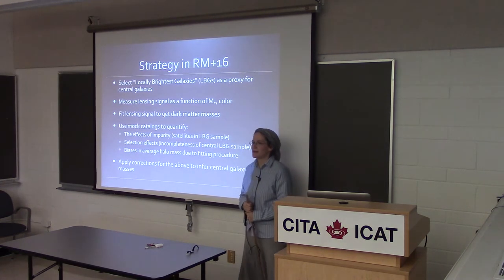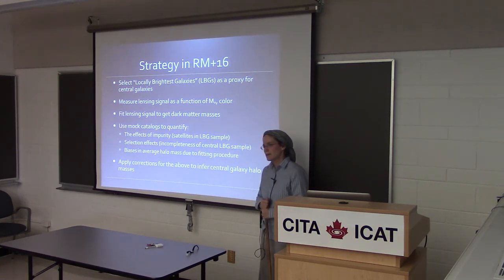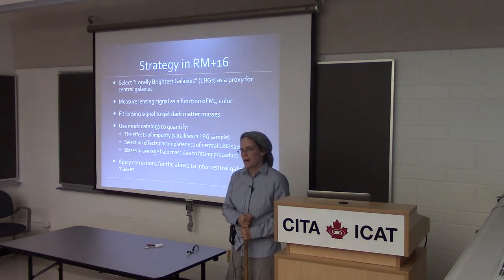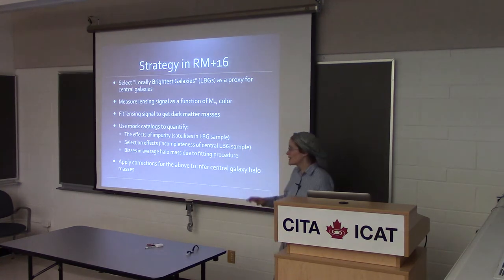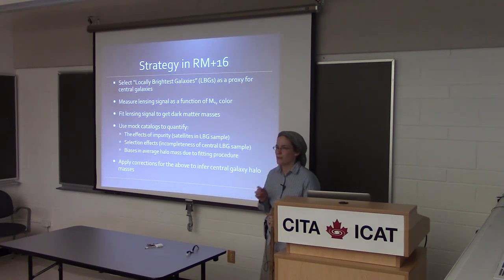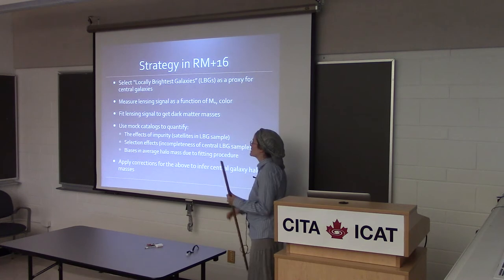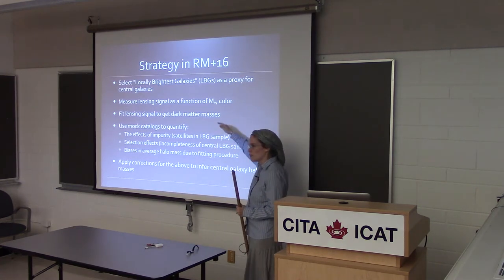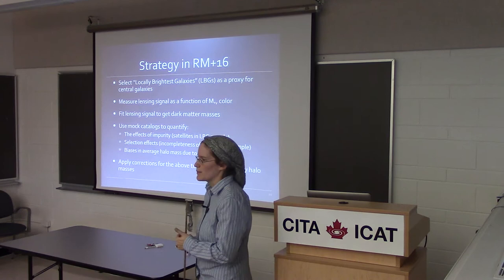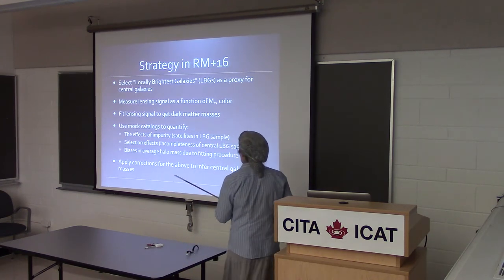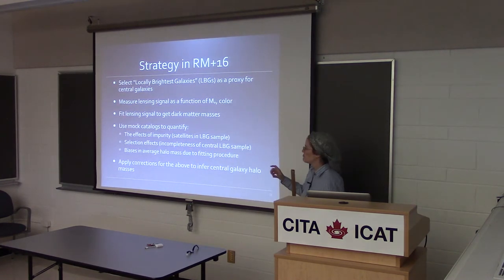Our approach was to use mock galaxy catalogs to quantify and correct for these uncertainties. In particular, we used semi-analytic galaxy catalogs in the Millennium simulation. There are actually eight different such catalogs, so we selected the locally brightest galaxies, made lensing profiles, measured all these biases in all eight of the catalogs, and used the differences in the results to quantify our systematic uncertainty. We apply corrections for all of these issues and then add a systematic error bar based on uncertainties in this whole process.